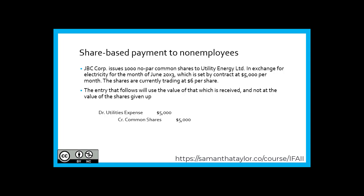Let's look at an example of share-based payments to non-employees. JVC Corp issues 1,000 no-par common shares to Utility Energy Limited in exchange for electricity for the month of June, which is set by a contract at $5,000 per month. The shares are currently trading at $6 per share. The entry will use the value of what is received, not the value of the shares given up. So we will debit utilities expense for $5,000 — the contracted price of energy — and credit common shares for that amount of shares issued.